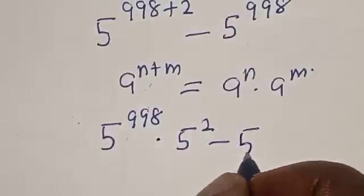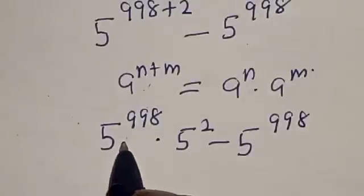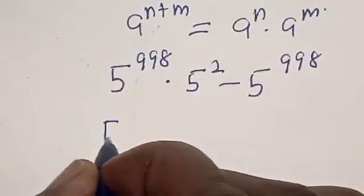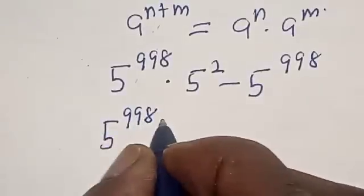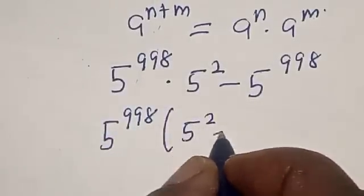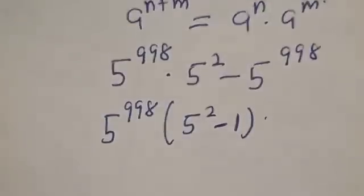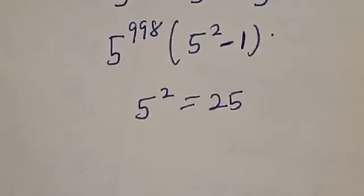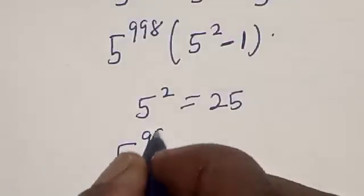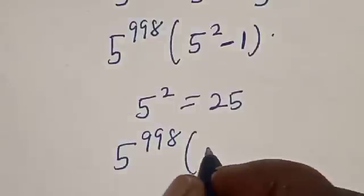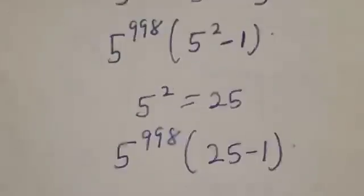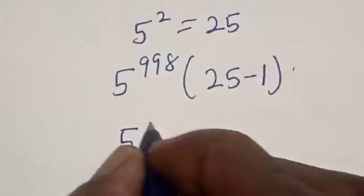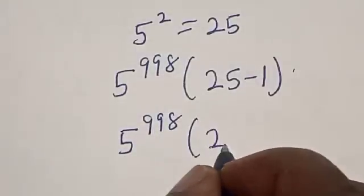Here we have 5 raised to power 998 in both terms, so let's factor it out. We get 5 raised to power 998 multiplied by (25 minus 1). Note that 25 minus 1 is equal to 24, so we have 5 raised to power 998 multiplied by 24.